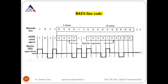The violations distinguish the substituted sequence from a normal byte containing a one. B8ZS does not allow more than eight consecutive zeros, and the bipolar violation pattern 000V 000V uniquely identifies the eight zeros. This bipolar violation pattern ensures that the voltage levels in the violating byte have a zero average value.